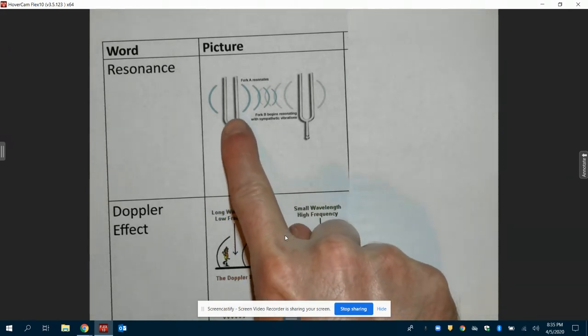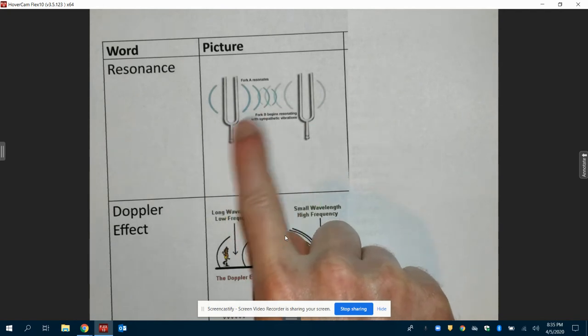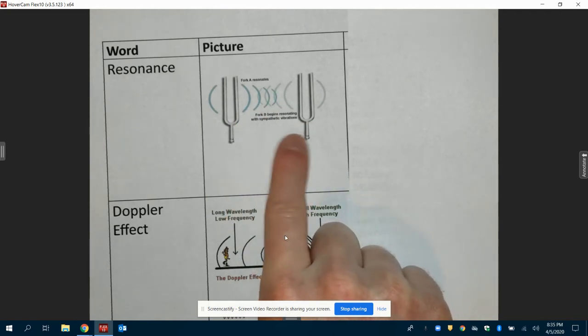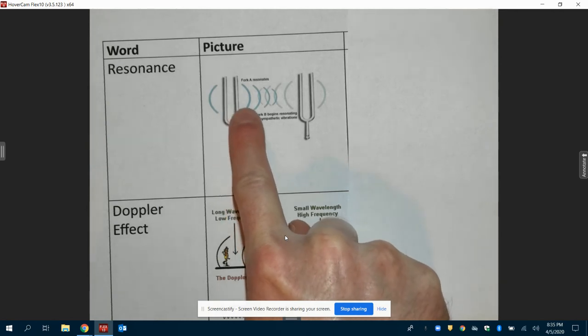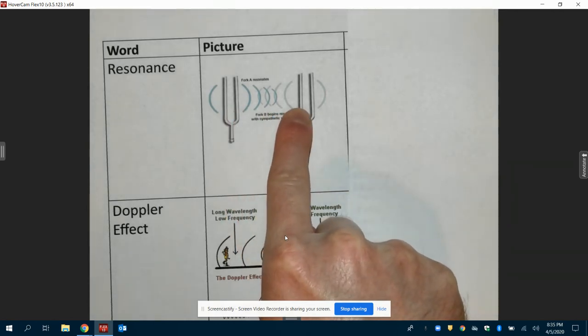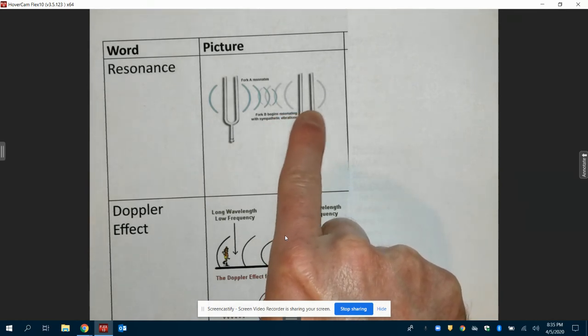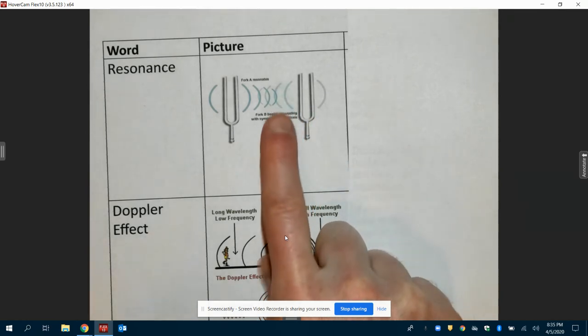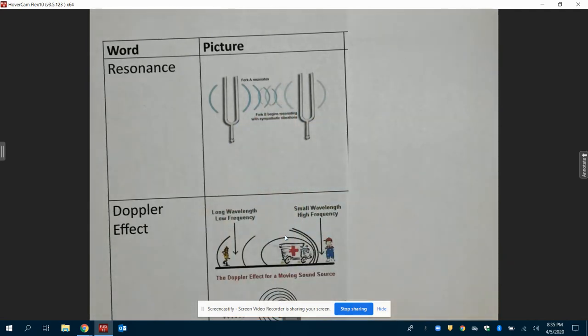Now what happens is if I take this tuning fork and one other one that has the exact same tune, so that these two are matched to one another, what happens is if I ding this one and let it play, those waves are going to hit here, transfer energy to it, and it's going to absorb it because it wants to vibrate at that same pace, and it will start ringing as well. And that could just go back and forth until enough energy is lost from going out to the sound.